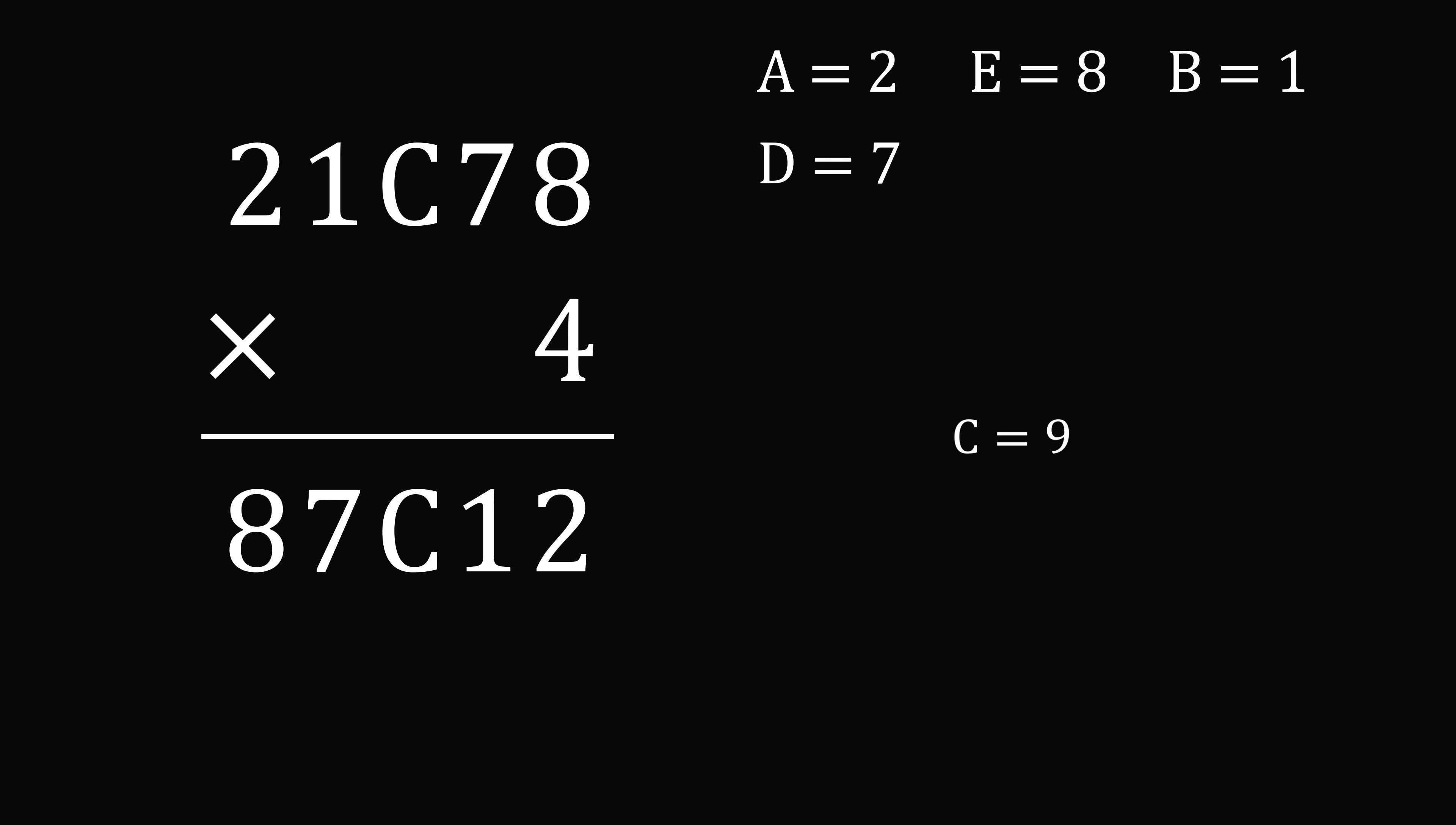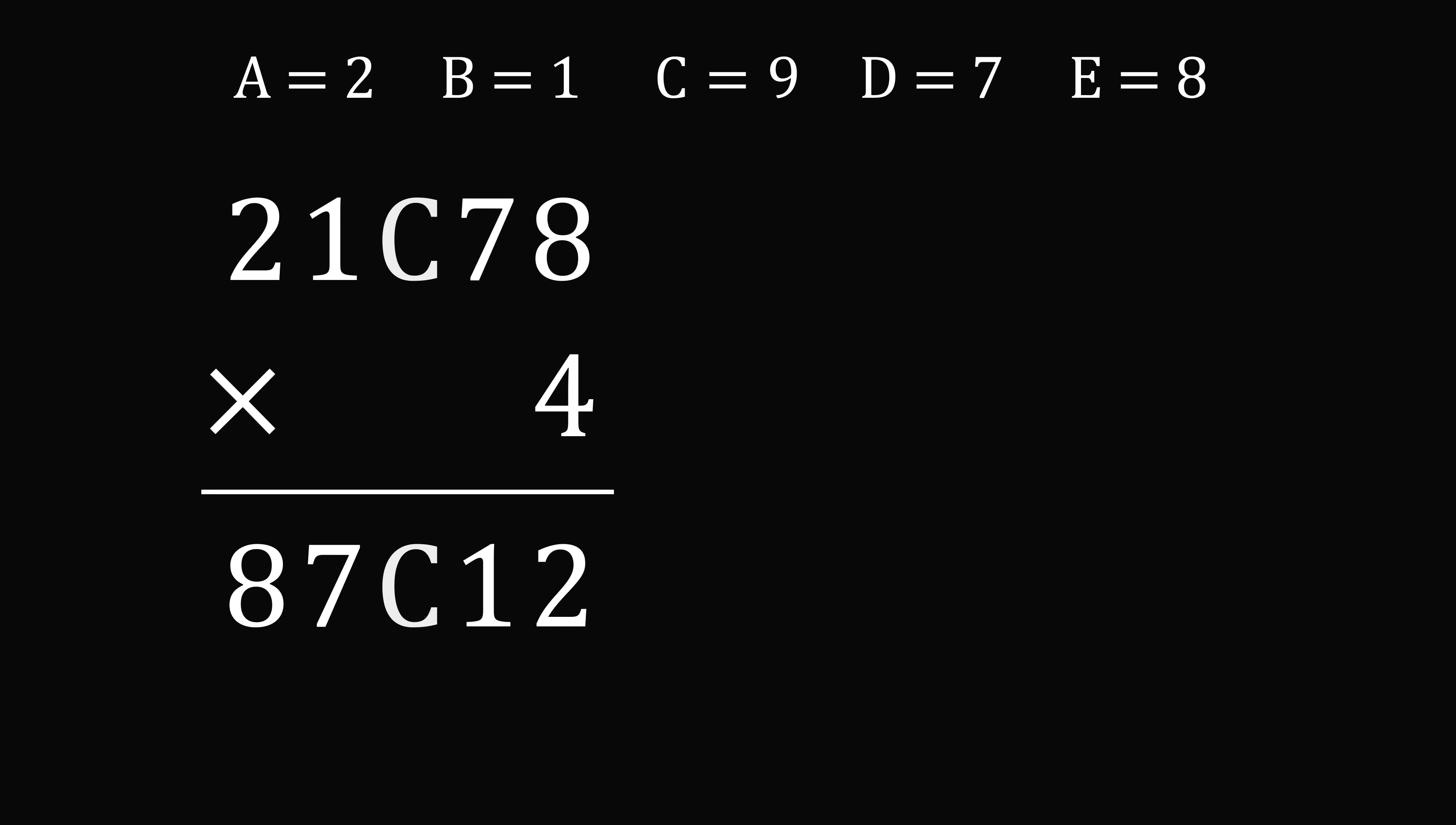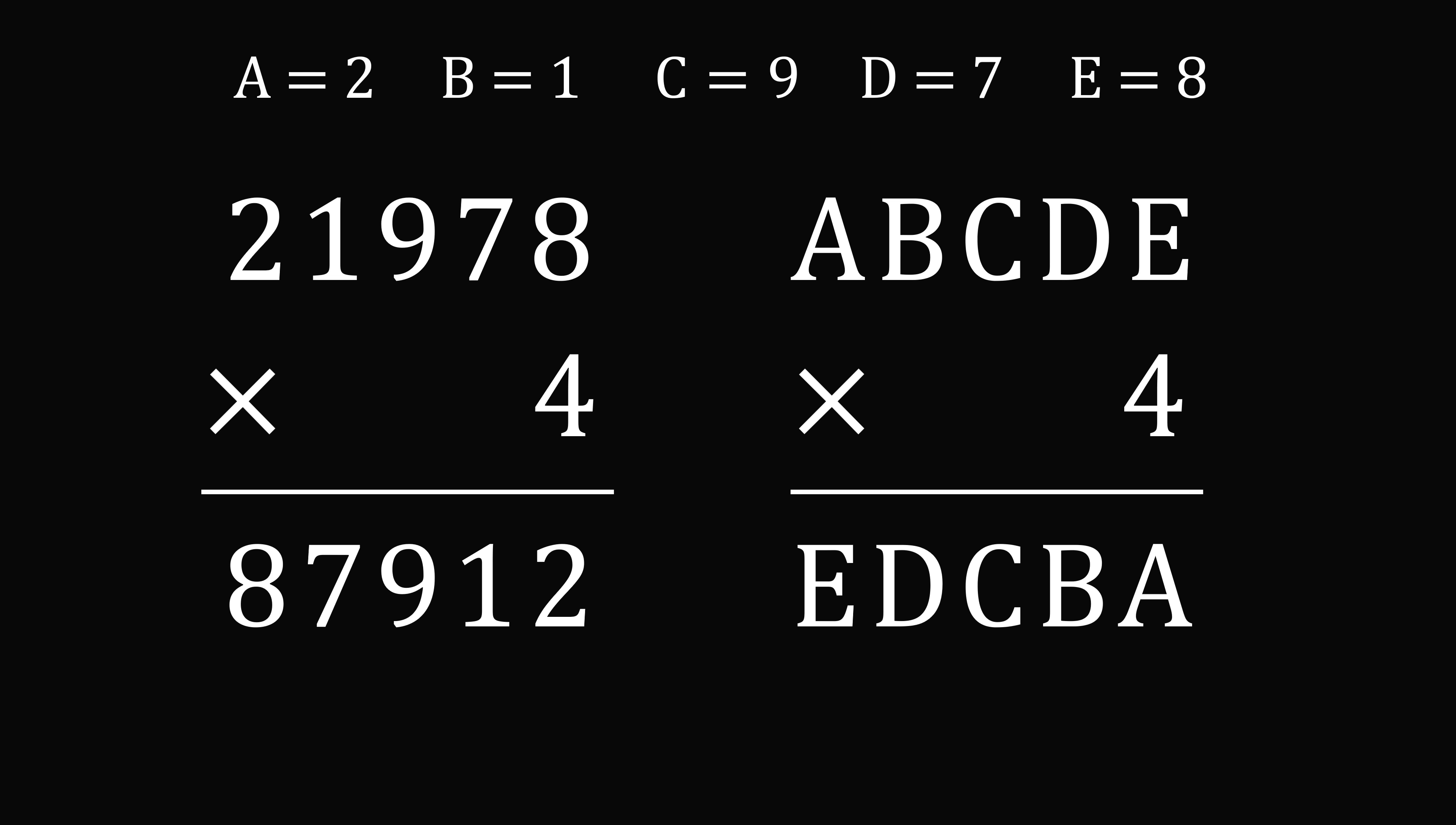So we figured it out. We figured out A is equal to 2, E is equal to 8, B is equal to 1, D is equal to 7, and C is equal to 9. So let's just finally put it in presentation form. The number is 21,978 multiplied by 4 is equal to 87,912. And that's the unique answer to this puzzle.